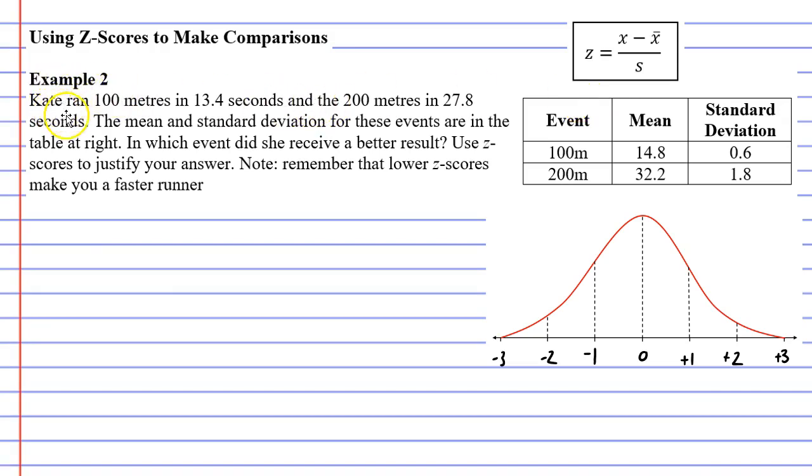In this particular video, we're just going to use the formula to calculate our z-scores. For example two, it says that Kate ran 100 meters in 13.4 seconds and the 200 meters in 27.8 seconds. The mean and standard deviation for these events are in the table at right. In which event did she receive a better result? Use z-scores to justify your answer. And note, remember that lower z-scores make you a faster runner.